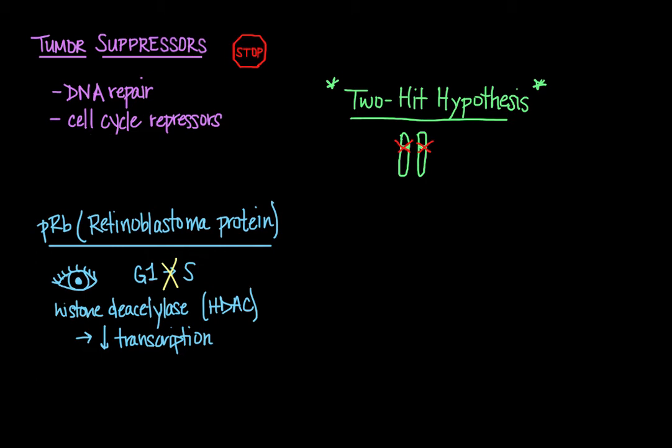Another very well-known tumor suppressor protein is the P53 protein. Homozygous loss of this protein is found in up to 65% of colon cancers, 50% of lung cancer, and also in breast cancers. So this is clearly a very critical tumor suppressor protein.